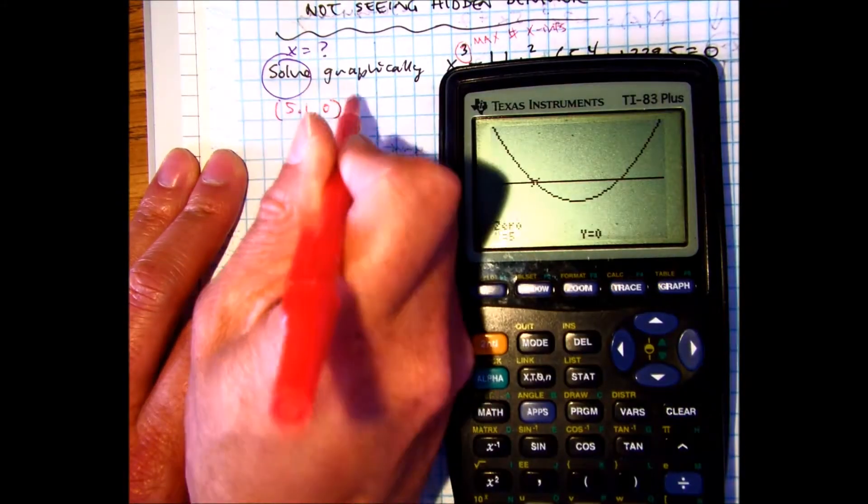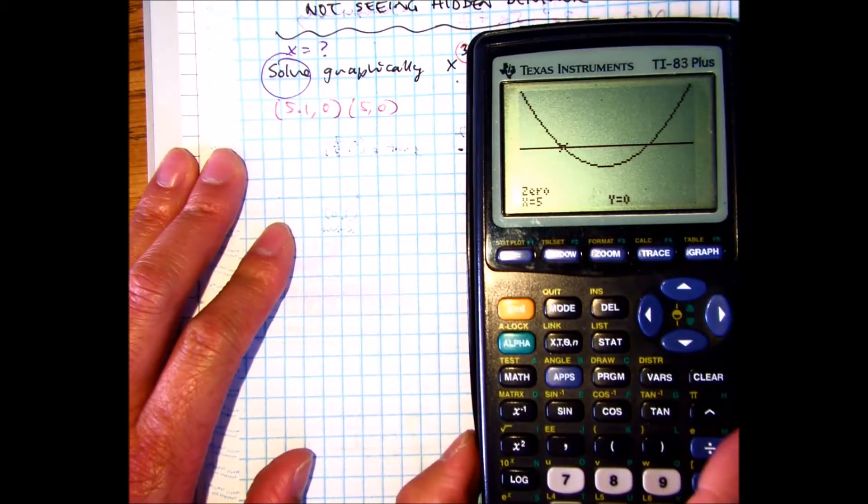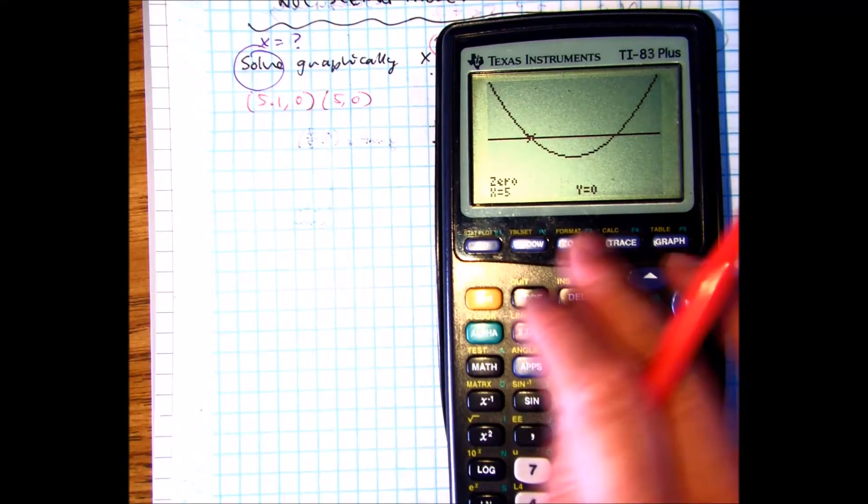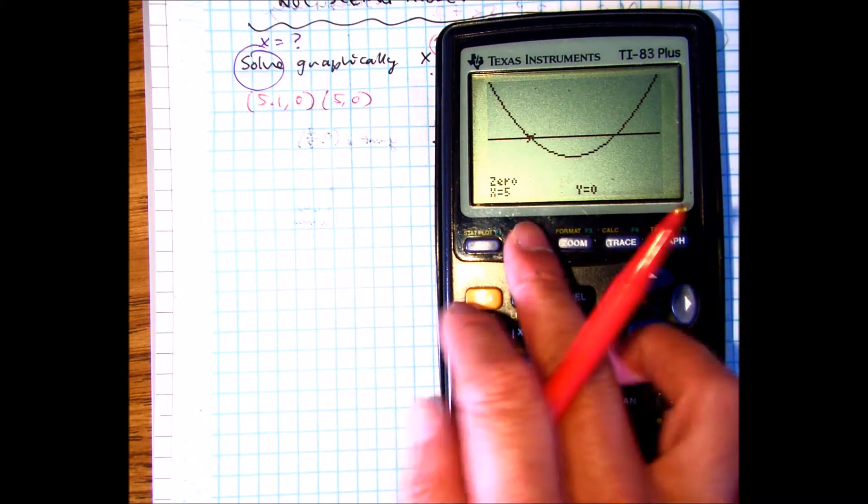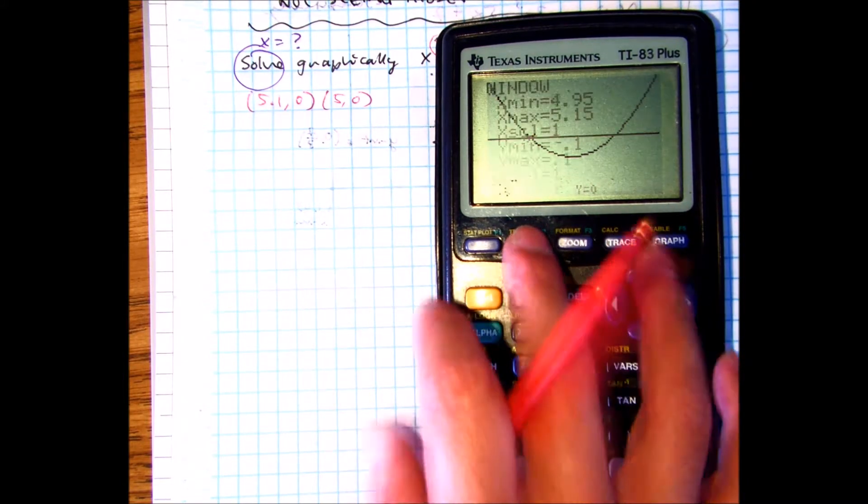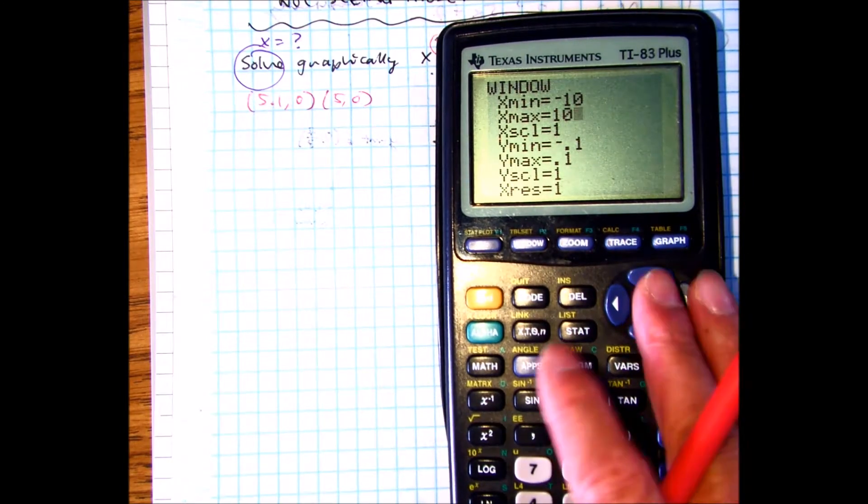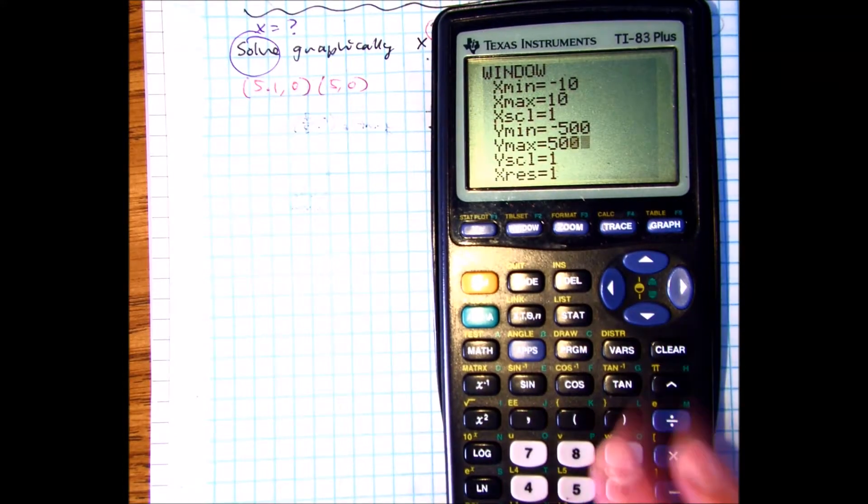Five exactly. So 5 comma 0. And I should have kept the old window. Got to go back. You could stay there, I'm going to go back to the old window. Negative 10, 10, 10, 1, Negative 500, 500, and count by 100.